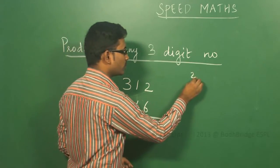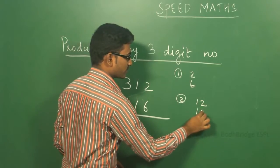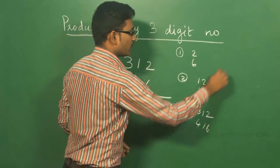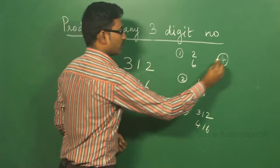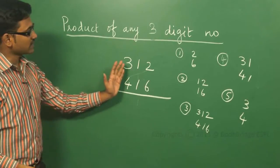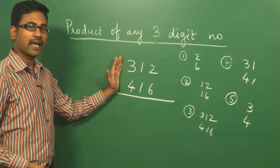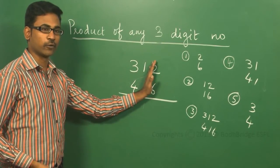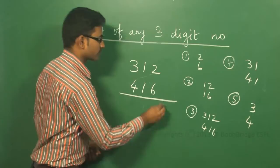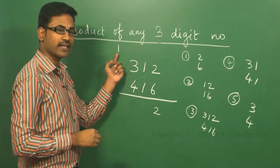First step: multiply 2 and 6, which gives 12, carry 1. The second step involves columns 12 and 16: 1 into 6 is 6, and 1 into 2 is 2; 6 plus 2 is 8, plus carry 1 gives 9.